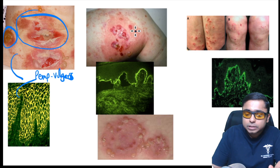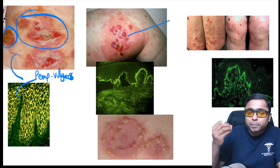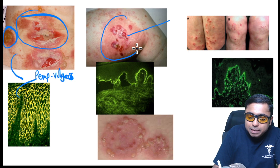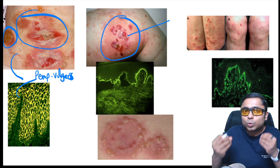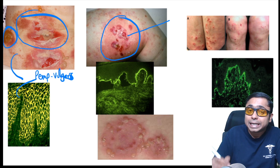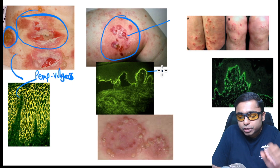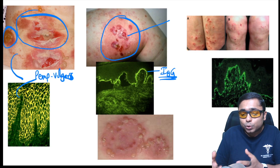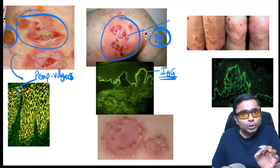The next condition shows tense bullae over erythematous urticarial skin — a subepidermal blistering disorder. Biopsy shows subepidermal blister. Direct immunofluorescence shows linear deposition of IgG along the basement membrane zone. The diagnosis is bullous pemphigoid.